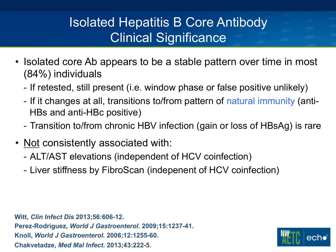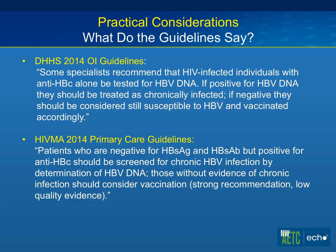This isolated core profile appears to be a stable pattern over time in the majority of individuals when retested — shown in the multicenter AIDS cohort. If it changes at all, it appears to transition to and from a pattern of natural immunity, meaning surface antibody and core antibody both positive, then loss of surface antibody. The transition to and from chronic infection with gain or loss of surface antigen was actually pretty rare. Most studies don't show a lot of ALT elevations, and one study using Fibroscan as a surrogate for hepatic fibrosis found that, independent of other factors like hepatitis C or lipodystrophy, these individuals weren't showing clinically significant findings.